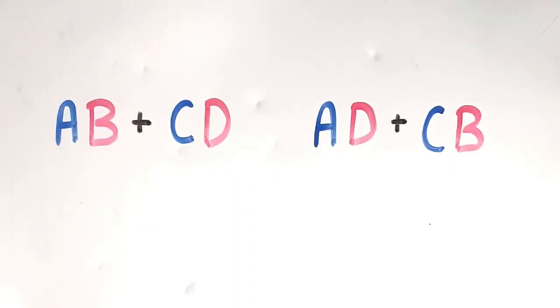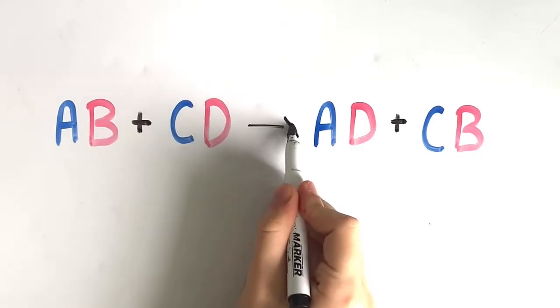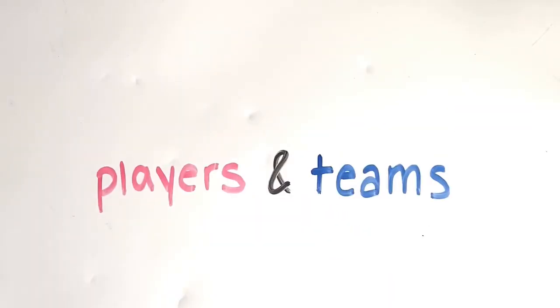This reaction is represented by the formula AB plus CD yields AD plus CB. A great analogy to help remember this reaction is a basketball analogy. We can relate this to basketball players and teams.